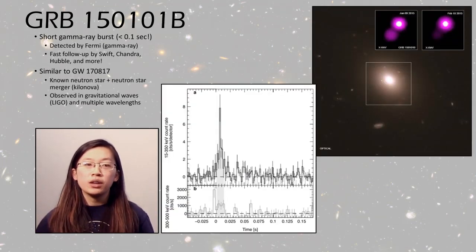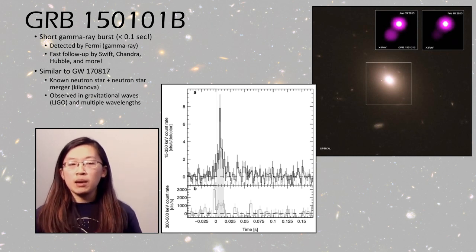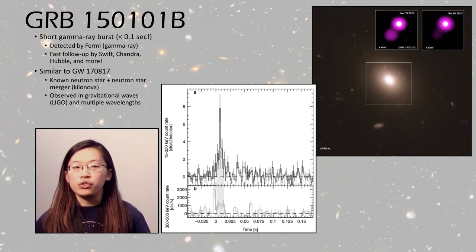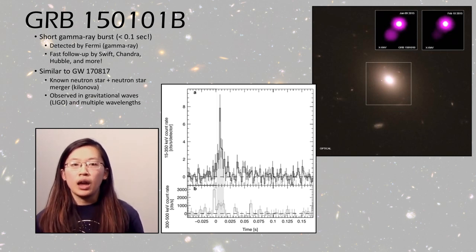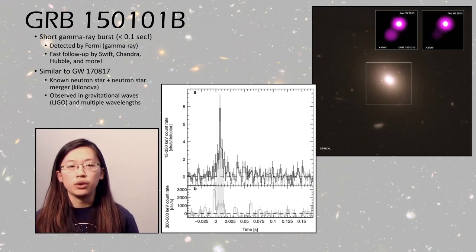Lastly, we have GRB150101B. So this was a gamma-ray burst. This was a short burst, which is less than 0.1 second, that was detected by the gamma-ray satellite Fermi. And then it was quickly followed up by Swift, Chandra, Hubble, and many more observatories.